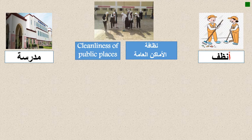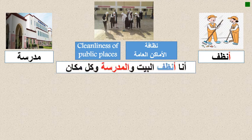This is our school — in Arabic it is مدرسة. Repeat after me: مدرسة. I will put both words in one sentence using أنظف. So: أنا أنظف — I clean — البيت — my house — وَ — and — المدرسة — the school.